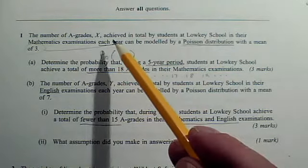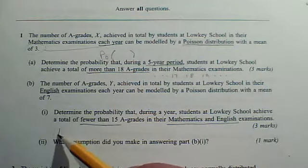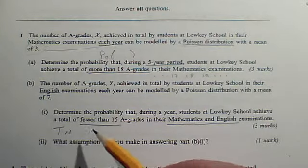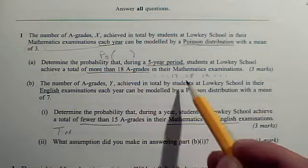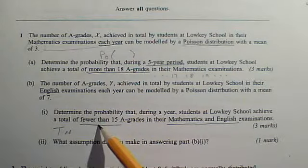So we've got a Poisson distribution for the maths, we've got a Poisson distribution for the English, and the total number of grades—you're going to set up a new distribution for that. And then again, by drawing the outcomes, accurately use tables to find the probability of fewer than 15.